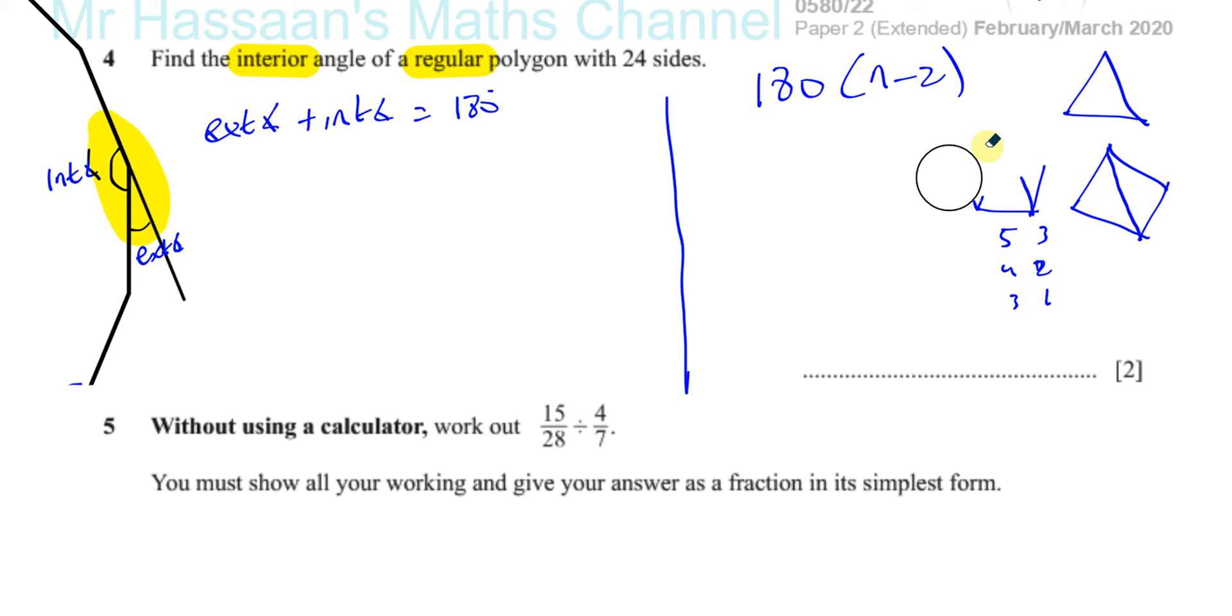So 180 times, in this case, it's going to be 180 times 22, which will give us the sum of the interior angles. And if you divide that by the number of sides, you'll get the size of one particular angle. So this would be 180 times 22, because 24 minus 2, over 24, which is the number of sides. And that should give you the answer.